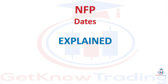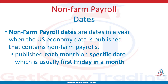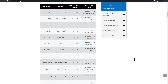Non-farm payroll dates are dates in a year when the US economy data is published that contains non-farm payrolls. The non-farm payrolls are published each month on a specific date, which is usually the 1st Friday of a month. Non-farm payroll dates are always on the 1st Friday of every month with the results for the previous month. The NFP dates for this year are in this table, where you can see which one is next based on the current date.